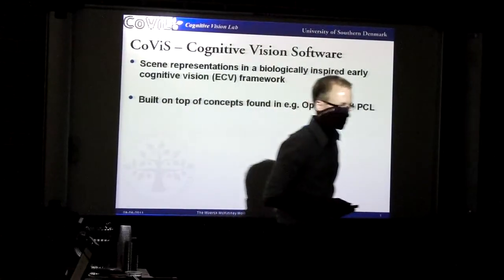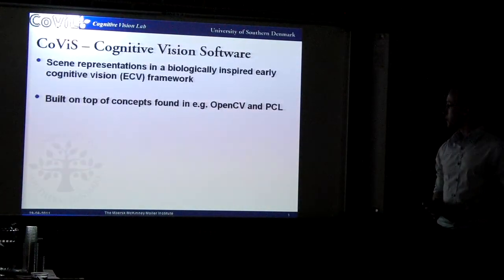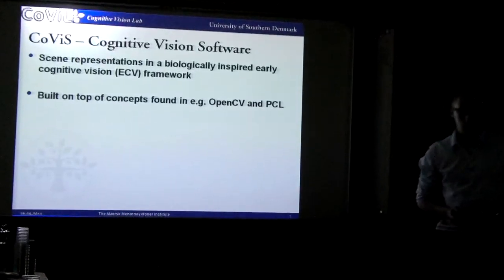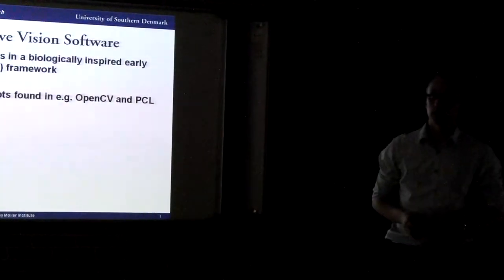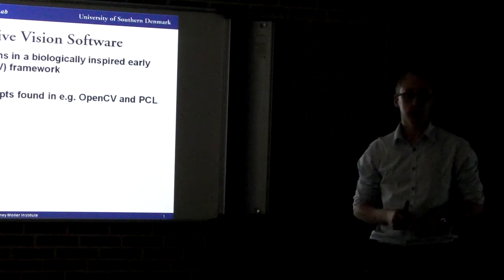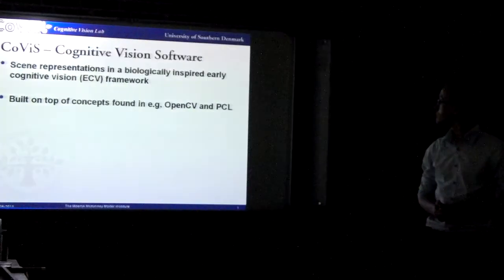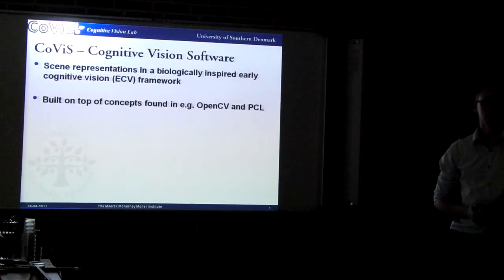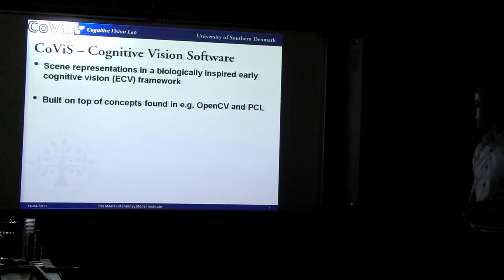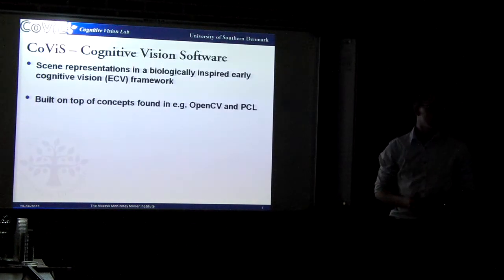Hello everyone, my name is Jetter. I'm a PhD student from the Cognitive Vision Group in Odense, started in September under the supervision of Norbert Krueger. I was told that you earlier this week discussed different vision frameworks. I'm going to talk about a framework called CoVIS — cognitive vision software — and I'd like to start with motivation and sort of put it on the map. There's a lot out there, so why choose CoVIS, why use CoVIS?